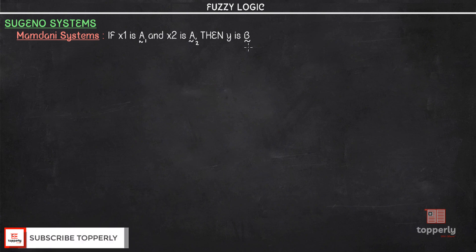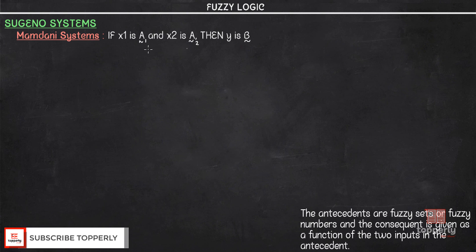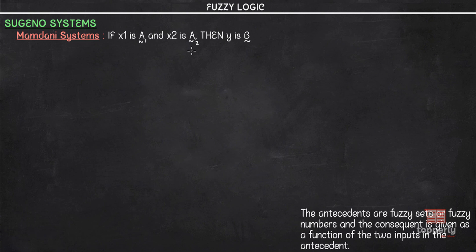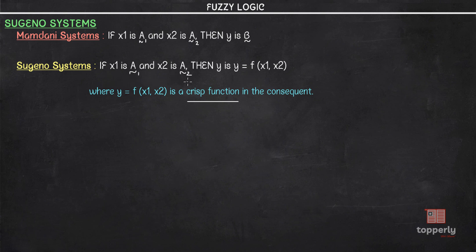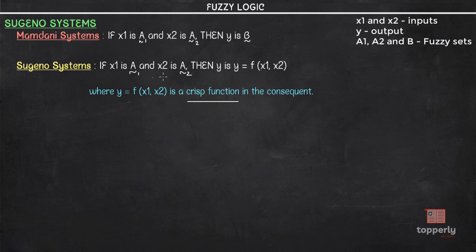However, in the case of the Sugeno system, the two antecedents are fuzzy sets or fuzzy numbers, but the consequent is given as a function of the two inputs in the antecedents. That is, it will be in the form of: if x1 is A1 and x2 is A2, then y = f(x1, x2), where f(x1, x2) is a crisp function in the consequent.